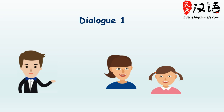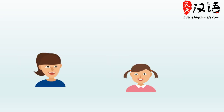请问,你们要喝什么？我要一杯茶。你呢,小玉？请问,你们有果汁吗？有。你要几瓶果汁？我要一瓶,谢谢。好的,不客气。小玉,这是谁的书？是你的还是哥哥的？这是我的书。哥哥的书在那里。妈妈,爸爸在哪里？他在公司.